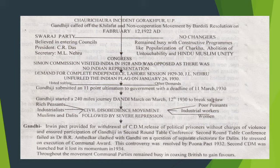The Simon Commission visited India in 1928 and was opposed because there was no Indian representation in it. Every place they went, people showed black flags and shouted 'Go back.' They were put down by the authorities.